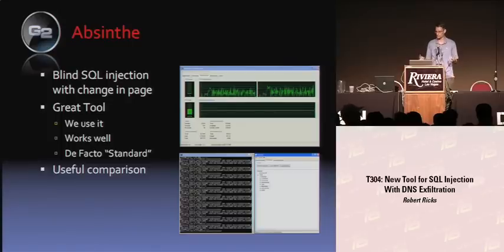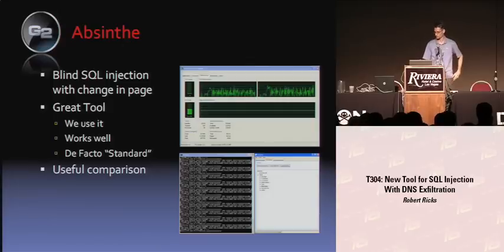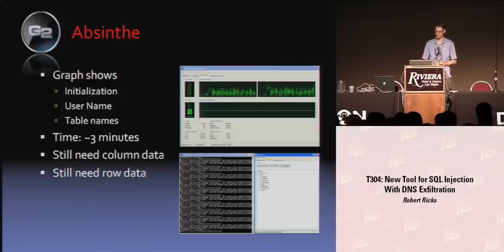Let's talk about Absinthe — I think it's kind of a de facto standard SQL injection tool and a lot of people use it, so I think it serves as a useful comparison. Absinthe with Oracle likes to do change-in-page comparisons. On the graph, we see how long it took to get a portion of what I got with my tool — about three minutes. With Absinthe, we were able to get the username and names of the tables in three minutes.